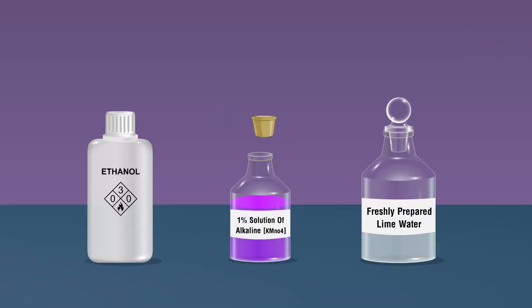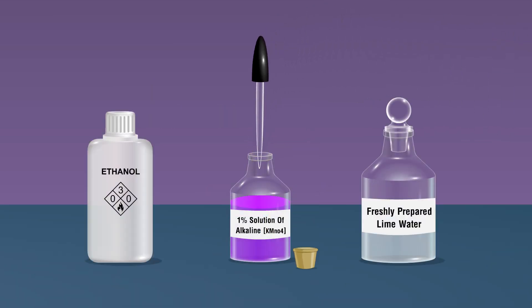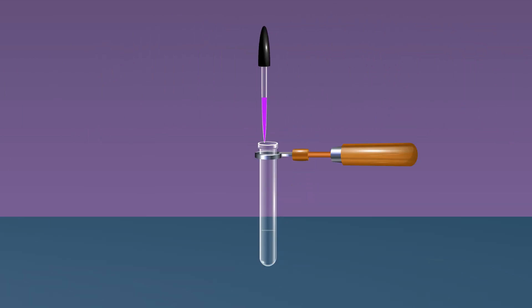Take alkaline KMnO4 solution using a dropper. To the boiling tube, add two or three drops of 1% alkaline KMnO4 solution. The purple color gets decolorized.